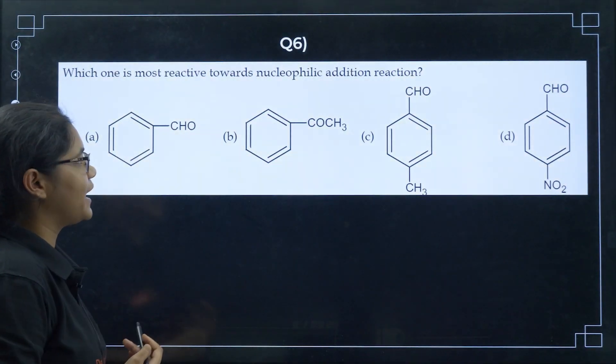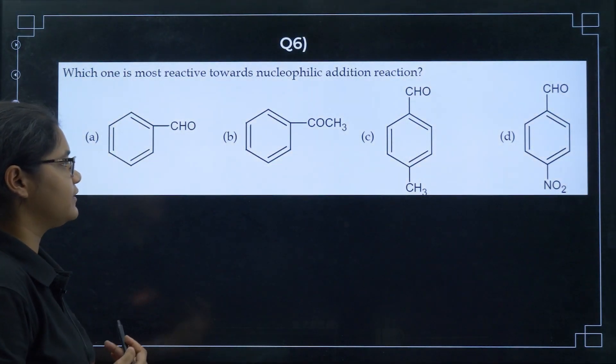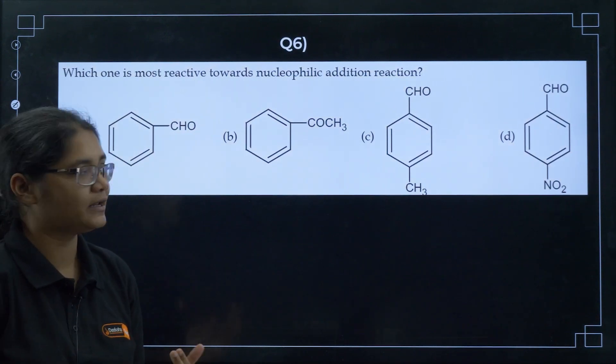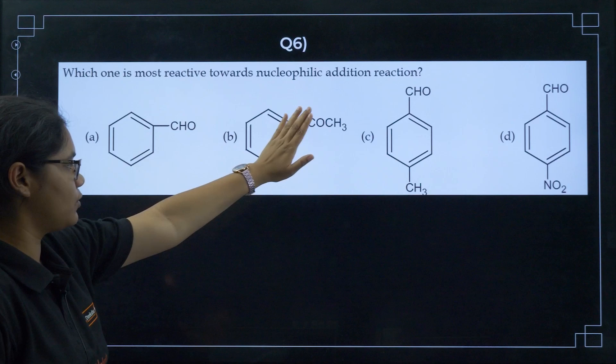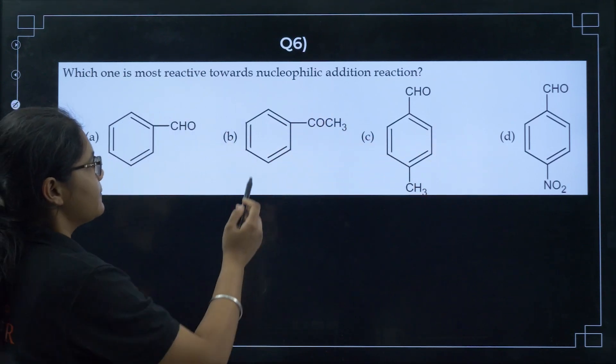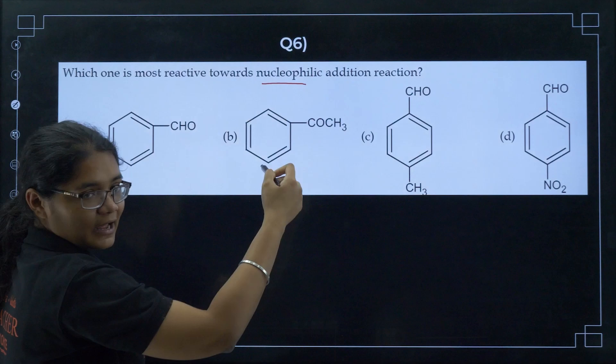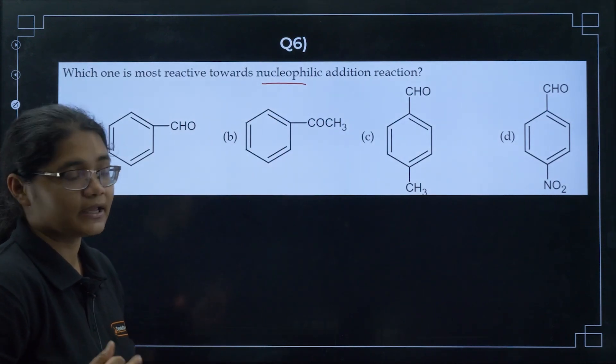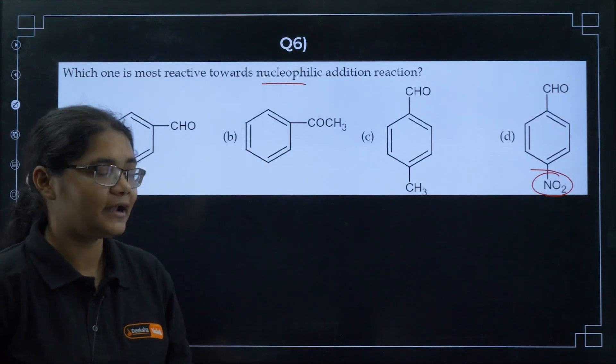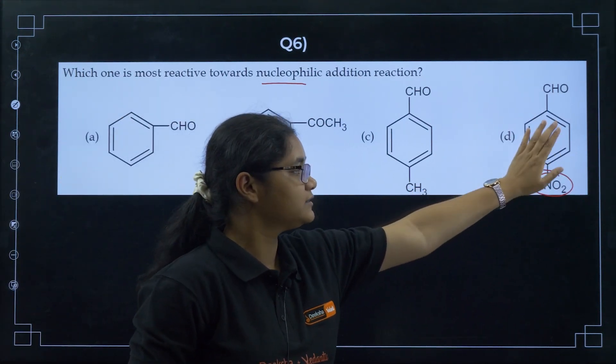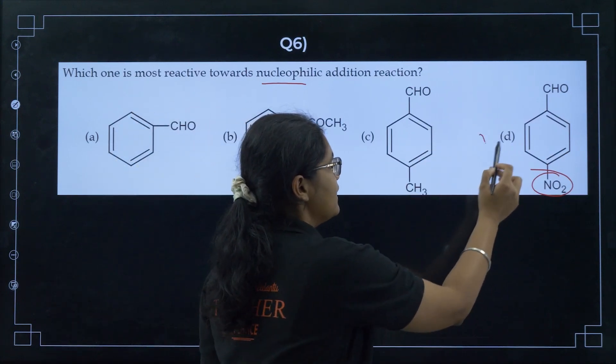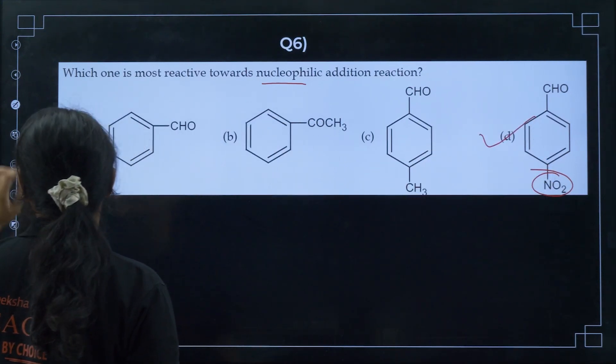Next question: the pair in which both compounds give a positive test with Tollens reagent. Sucrose will not give because it does not have any free aldehyde group. Glucose and fructose both will give because they have free aldehyde groups. Option B here. Next, which one is most reactive towards nucleophilic addition reaction. Again, aldehydes are more reactive.